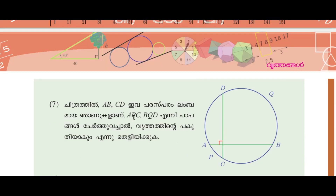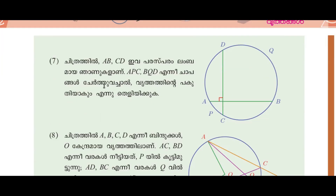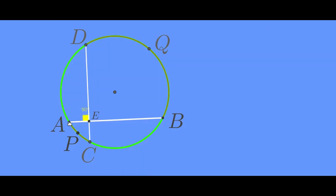The arcs APC and BQD are to be shown to form a half circle. Arc APC — now it is arc APC, and it is BQD. When you see these two things, I will show you another half.